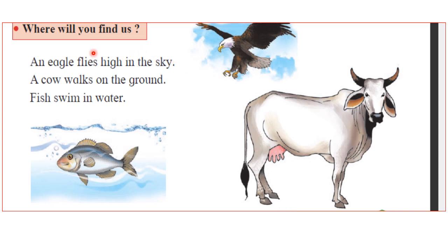Where will you find these animals? An eagle flies high in the sky. A cow walks on the ground. Fish swim in water — fish can live only in water. Animals like cow, buffalo and goat have four legs and we see them walking on land. Many birds we can see flying in the sky with the help of wings.